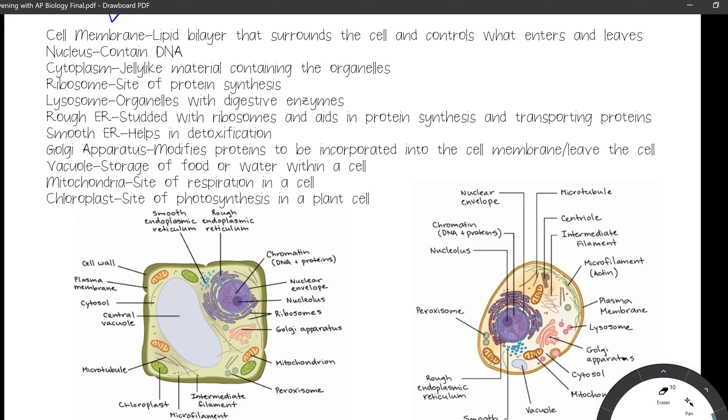Your vacuole is going to be for storing of food and water within a cell. Mitochondria is the site of respiration, which we will talk about. And chloroplasts are the site of photosynthesis. Both mitochondria and chloroplasts will be mentioned tomorrow night.